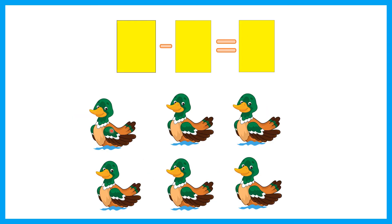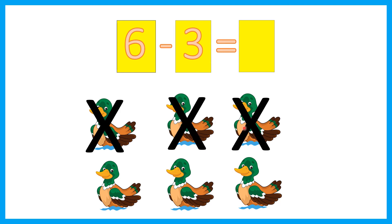What about these ducks? How many ducks are there? 1, 2, 3, 4, 5, 6. There are six ducks. Minus three. So we need to cross out three ducks. 1, 2, 3. So how many left? Let's count. 1, 2, 3. That's right. Three.